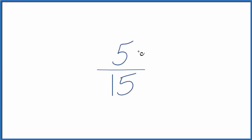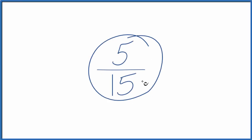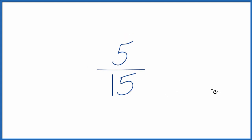Let's find three equivalent fractions for 5/15. What we want to do is find another fraction that's equivalent — equal to 5 divided by 15. You get the same decimal value, just with a different numerator and denominator.